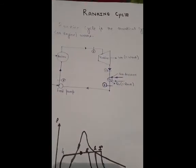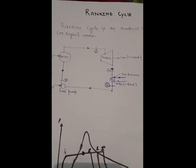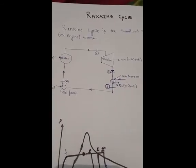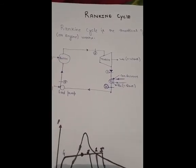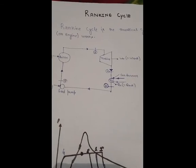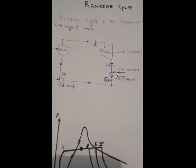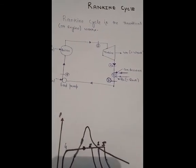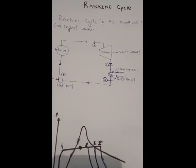Today we are going to discuss the Rankine cycle. The Rankine cycle is a theoretical cycle in which four things are very important: boiler, turbine, condenser, and feed pump.